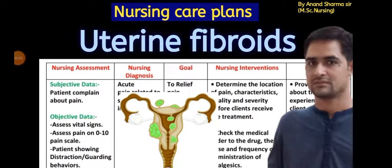Hello friends, welcome to my YouTube channel Anand's Nursing File. Today in this video we will learn about the uterine fibroid nursing care plan. This is a very important nursing care plan. We will make a nursing care plan using different nursing process steps: nursing assessment, diagnosis, goal, intervention, rational, and evaluation.